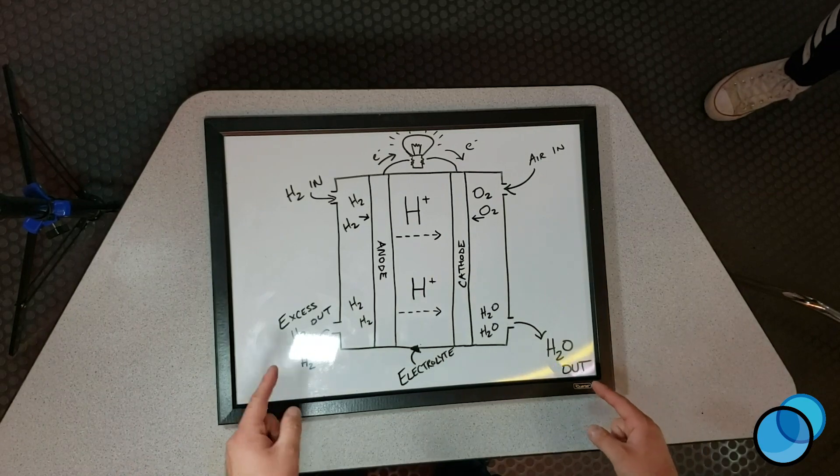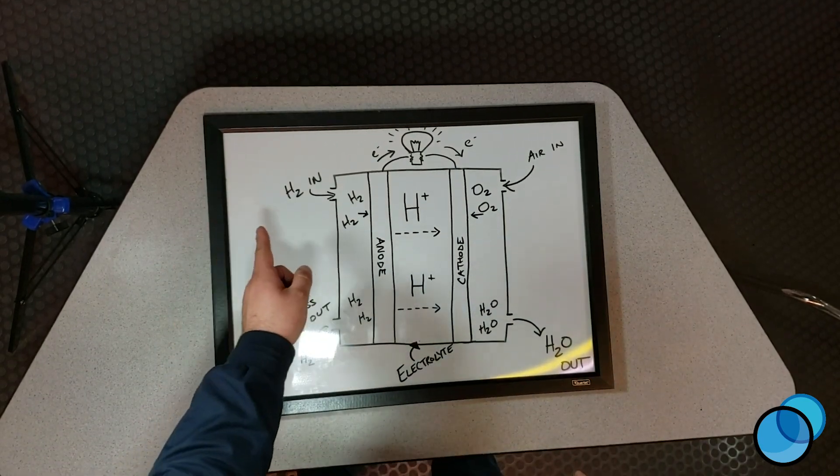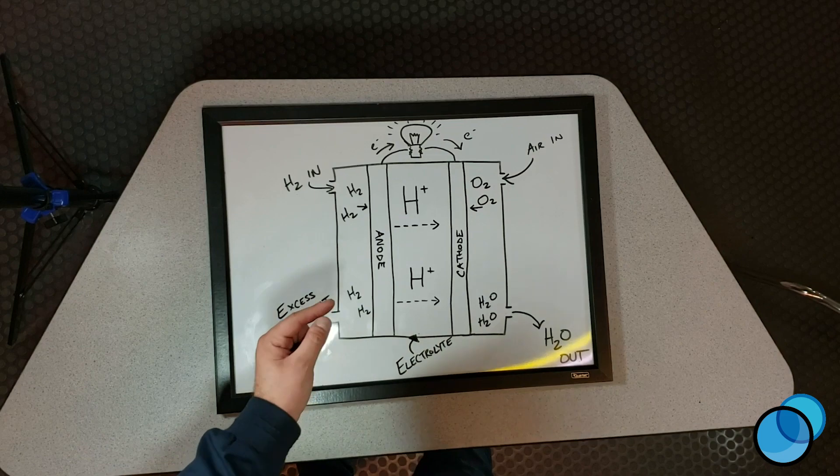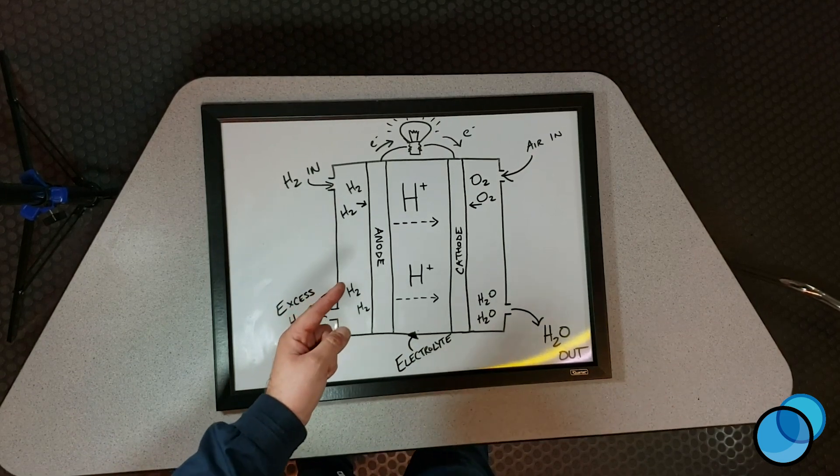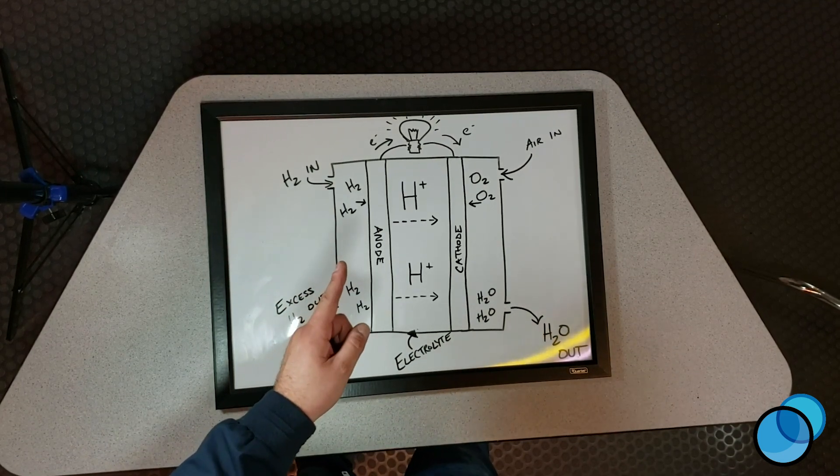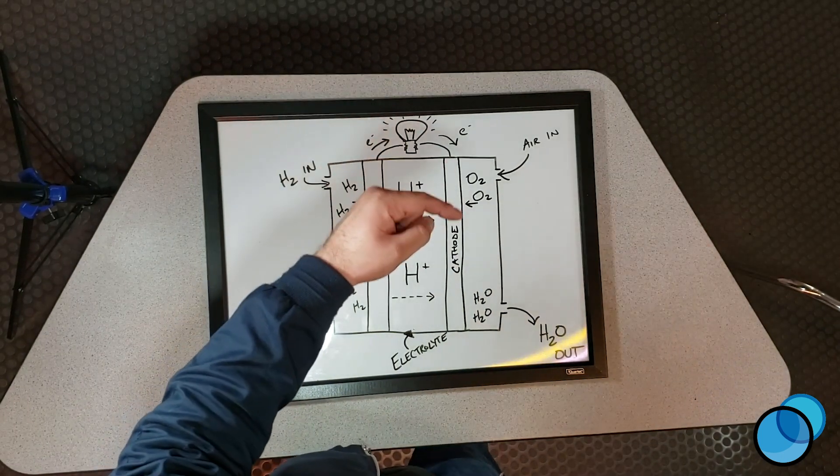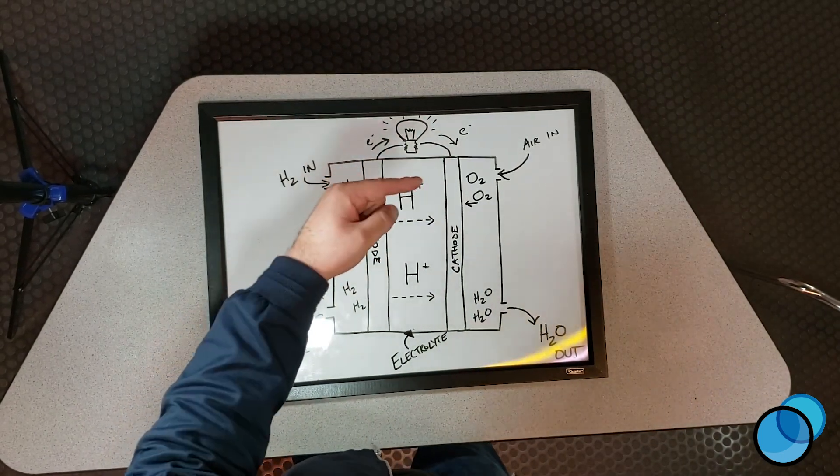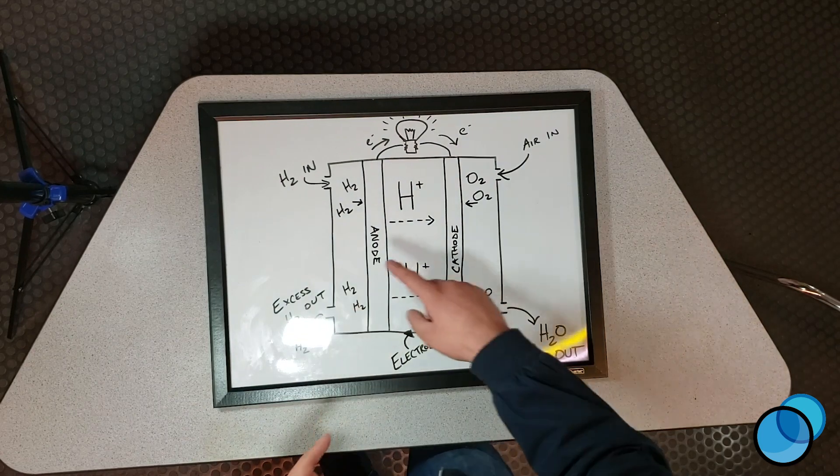What we have going on here as you can see is hydrogen is flowing in through the anode side. Now what's happened with the hydrogen here is the electrons are being stripped off of the hydrogen ion and the electrons are going through the top. They're going through a load. This is how we actually get power. So the electrons are going through the load as you can see here.